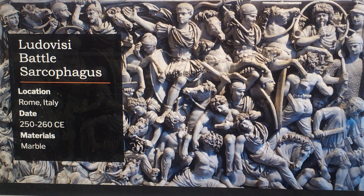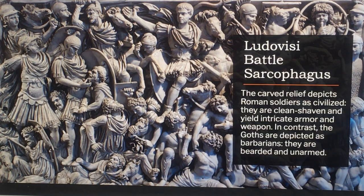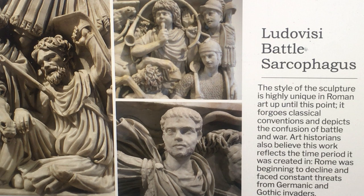The Ludovisi Battle Sarcophagus is located in Rome, 250 to 260 CE, made of marble. This sarcophagus is notable for its densely populated, visually confusing composition of suffering and highly emotional Roman and Goth soldiers engaged in battle. The carved relief depicts Roman soldiers as civilized — clean-shaven with intricate armor and weapons — while the Goths are depicted as barbarians: bearded and unarmed. The style is highly unique in Roman art, foregoing classical conventions to depict the confusion of battle. Art historians also believe this work reflects its time period, as Rome was beginning to decline and faced constant threats from Germanic and Goth invaders.